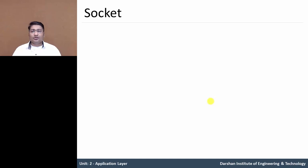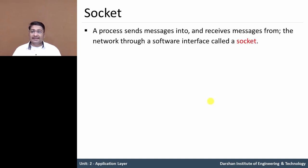Let us see what a socket is. Any message sent from one process to another must go through the underlying network. So we can say that a process sends or receives messages from the network through a software interface called a socket.